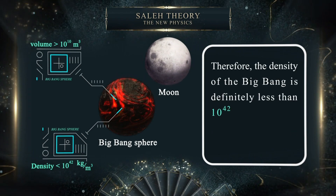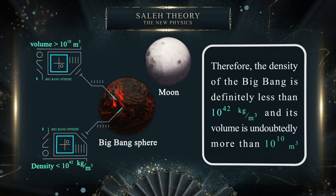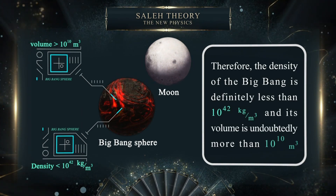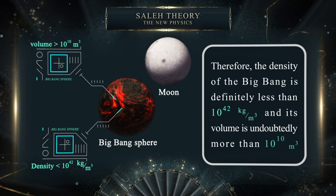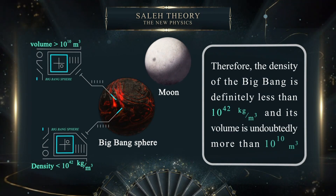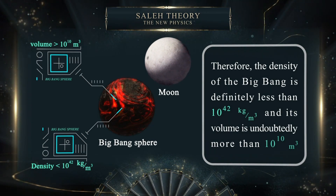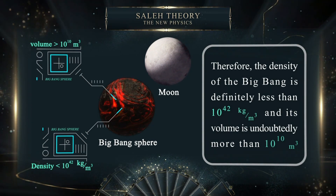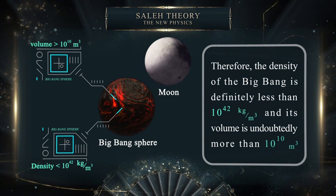Therefore, the density of the Big Bang is definitely less than 10 to the power of 42 kilograms per cubic meter, and its volume is undoubtedly more than 10 to the power of 10 cubic meters.